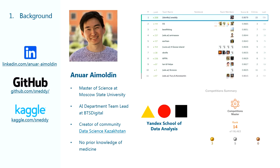Okay, let's start with a little info about me. My name is Anwar, I am a data scientist from Kazakhstan. I got my master's degree in computer science and applied mathematics from Moscow State University, and I also graduated from Yandex School of Data Analysis.